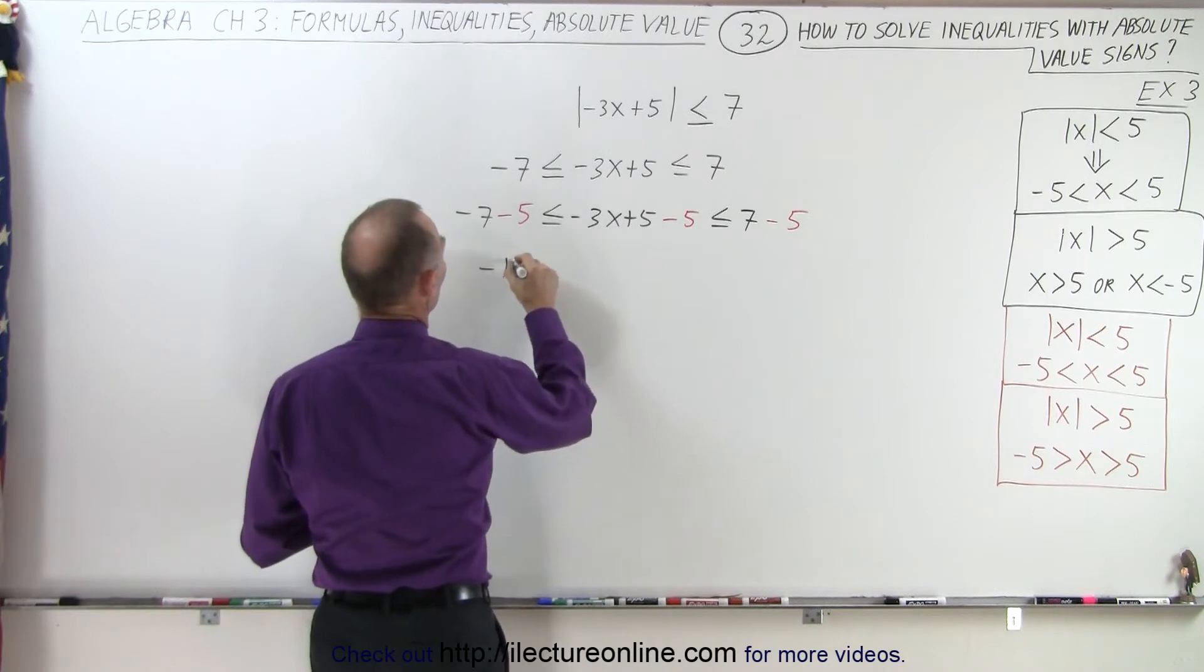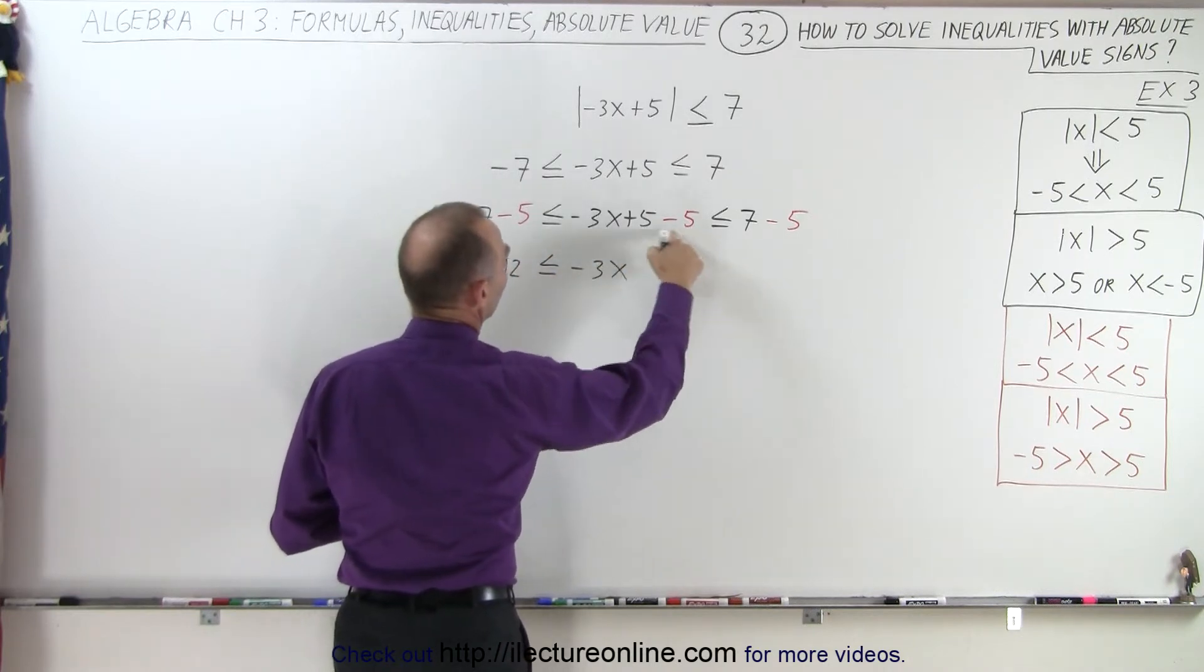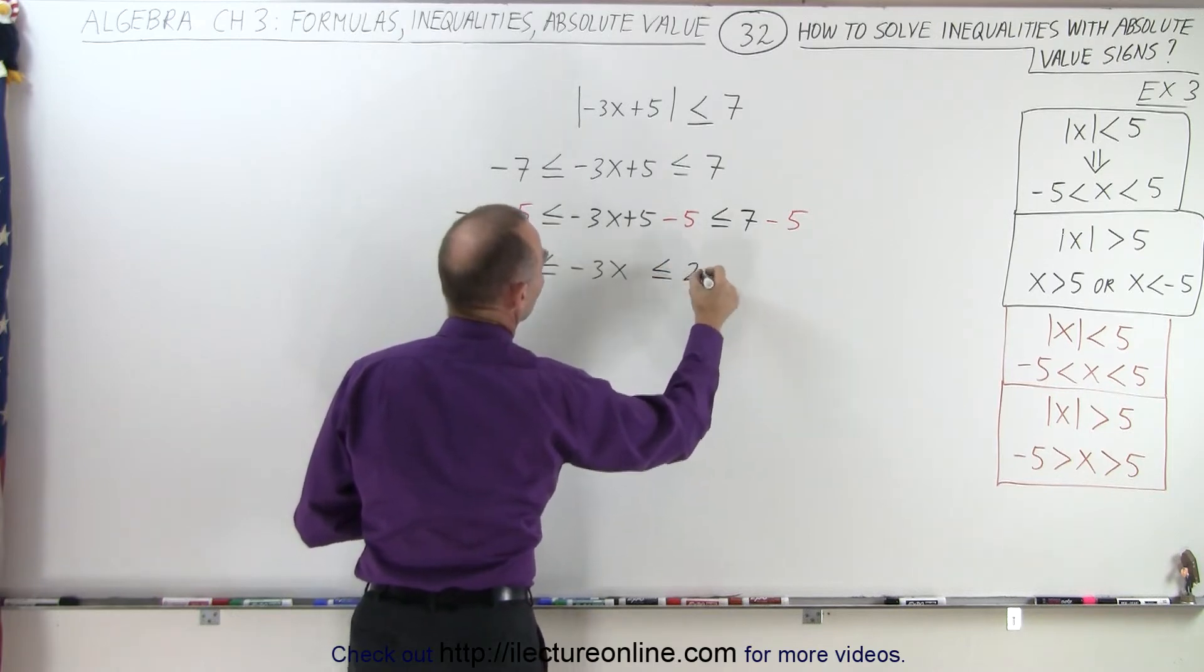So on the left side, we end up with minus 12, less than or equal to minus 3x. These cancel out. Less than or equal to a positive 2.